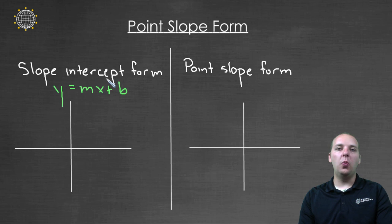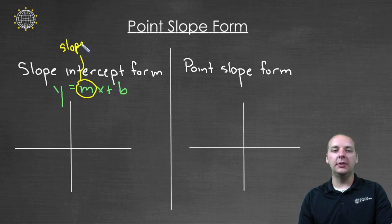Think about this: what do you need to write the equation of a line in slope-intercept form? Well, you need its slope, that's what the m represents, and you need its y-intercept, that's what the b represents.